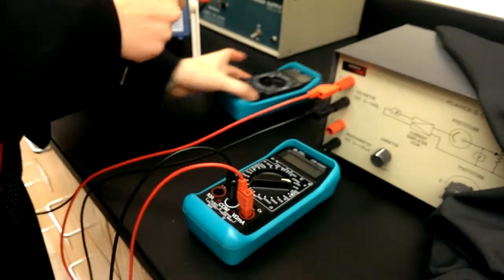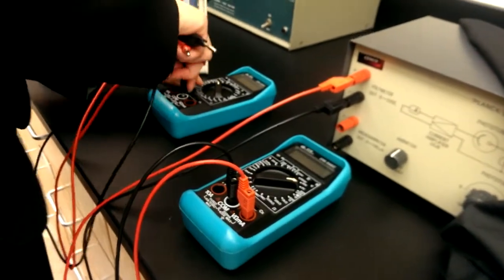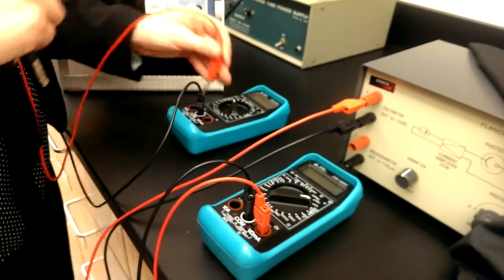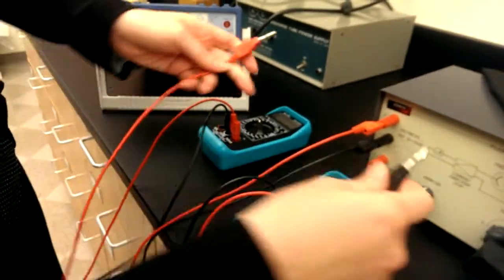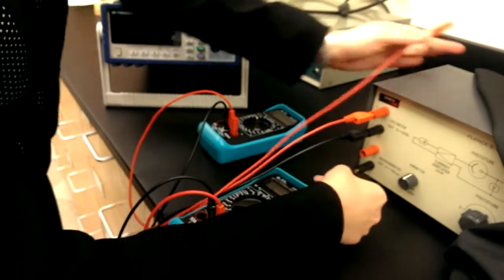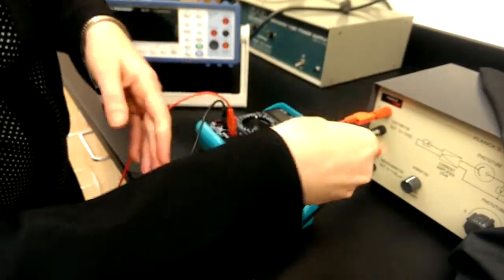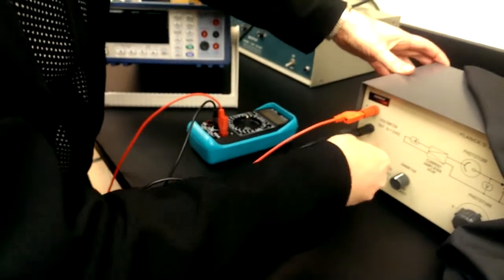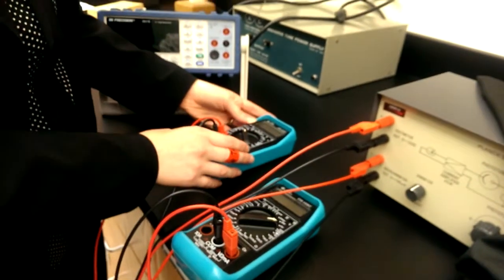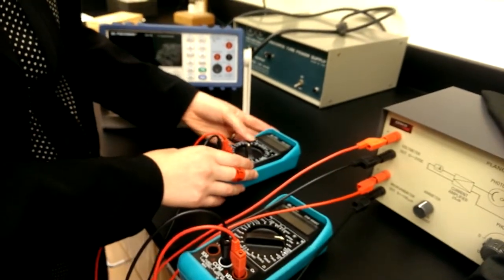And then the other thing you need to measure is your current. Now this current is going to be really small, so I'm going to start by showing you what you might see. As normal, ground to ground, and in this case, because it's a really small current, you want the current reading to be on the 2 milliamp setting.